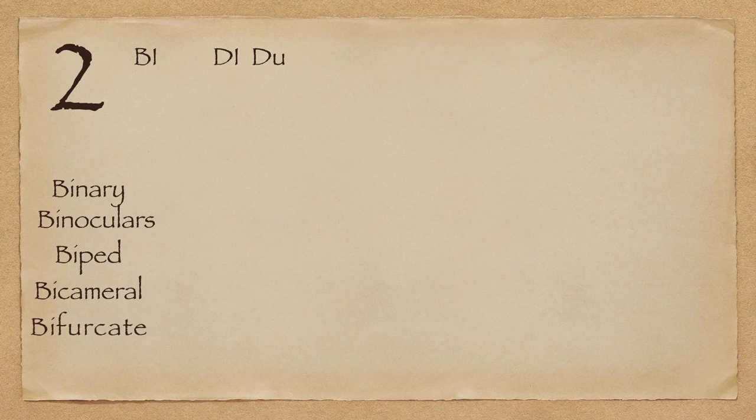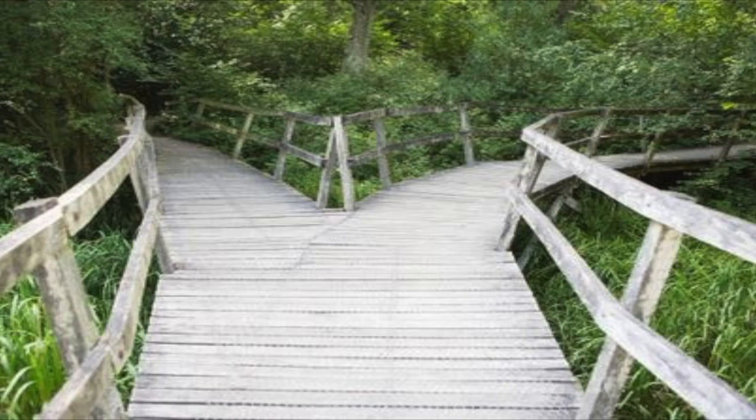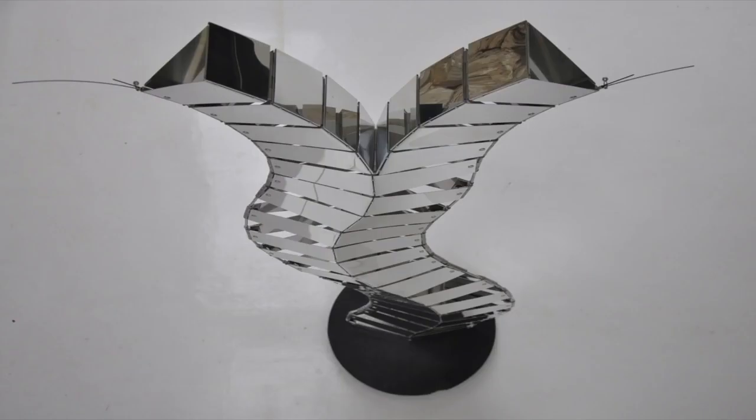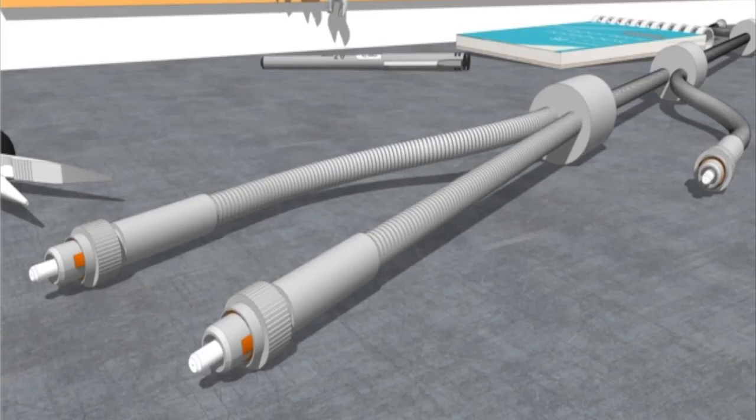Bifurcate — to divide into two or fork into two. Bi means two and furca is the same root as a fork. So when a path divides into two, such a situation would be called a bifurcation.